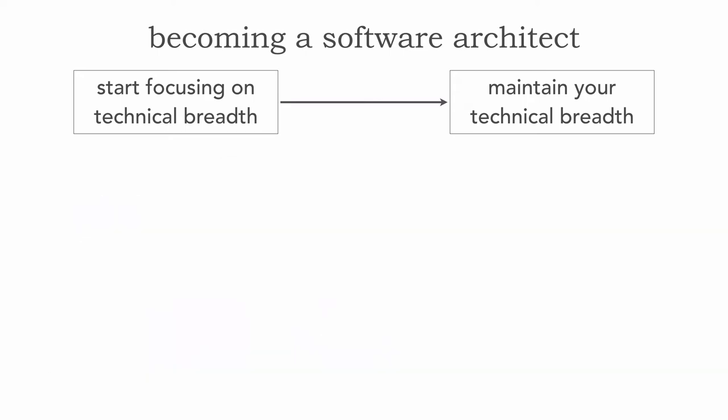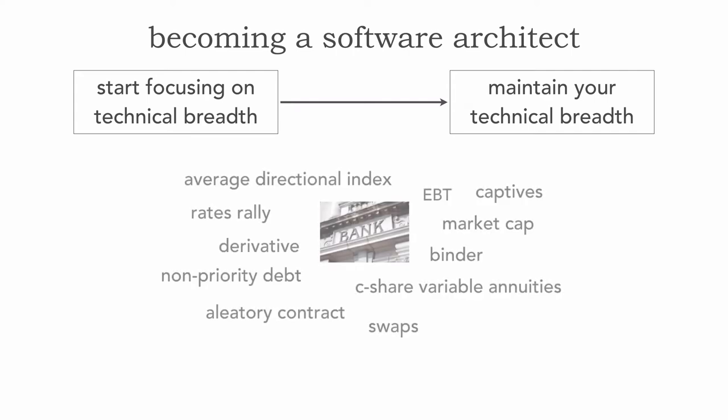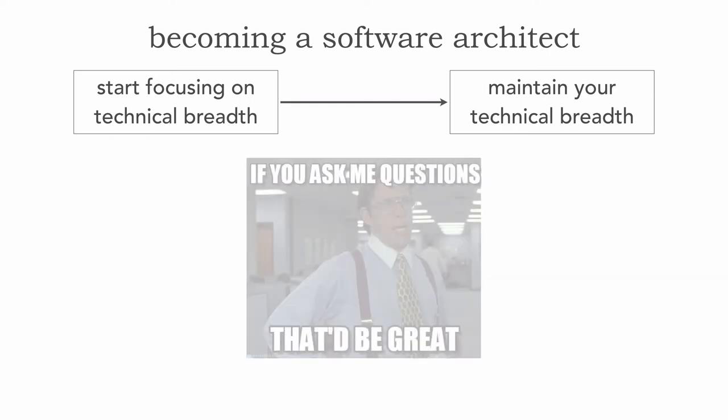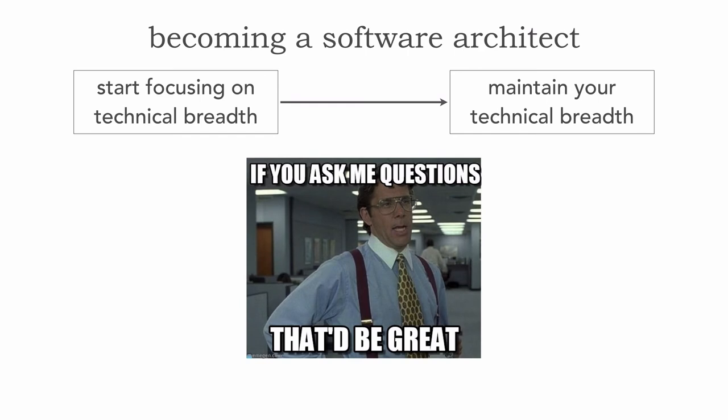Now, that's good for technical breadth. But what about industry knowledge? While we're starting to focus on technical breadth to make that transition to become a software architect, at the same time we also need to satisfy that fifth core expectation of an architect — to have a certain level of business domain and industry knowledge. Hands down, by far, the absolute best way I can tell you to gain industry knowledge as a senior developer or tech lead is to start asking questions.